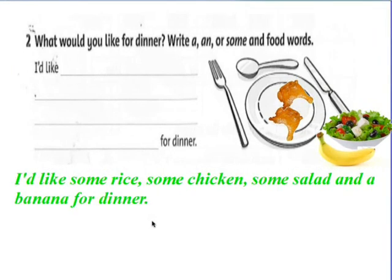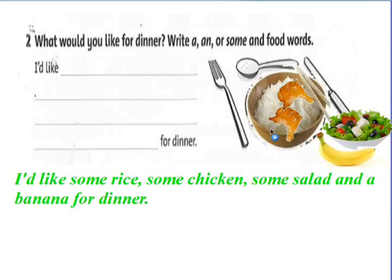I'd like some rice, some chicken, some salad, and a banana for dinner. Remember to put a period at the end of the sentence — students often forget this. When listing, use commas after each item, 'and' before the last item, and a period at the end.